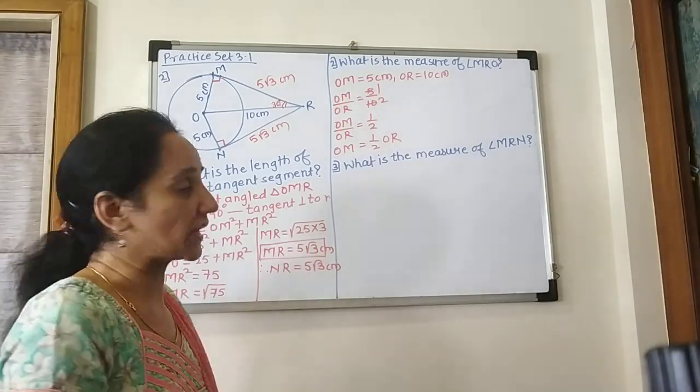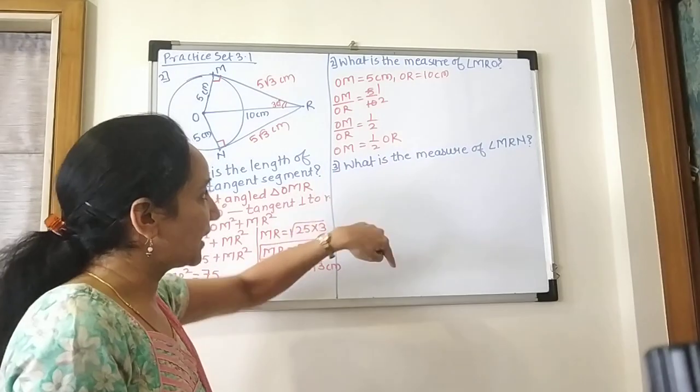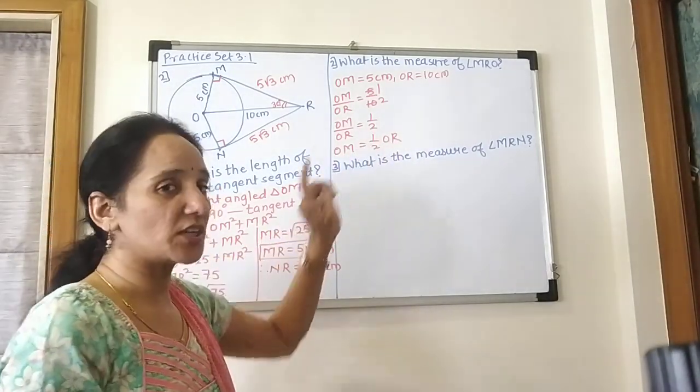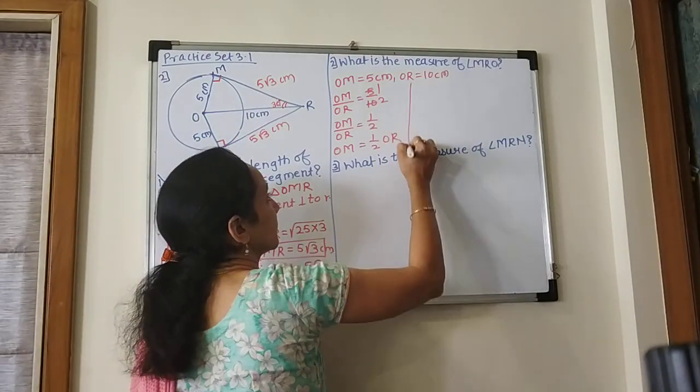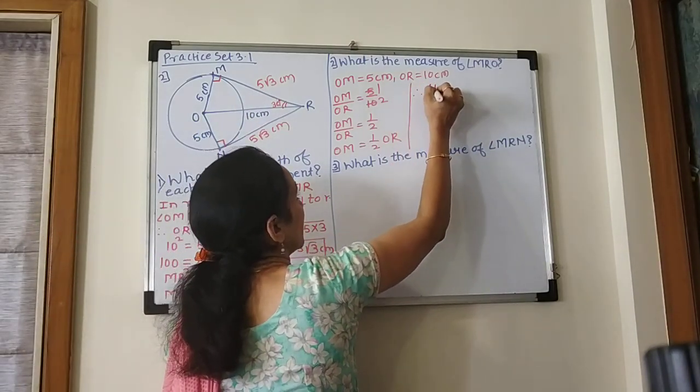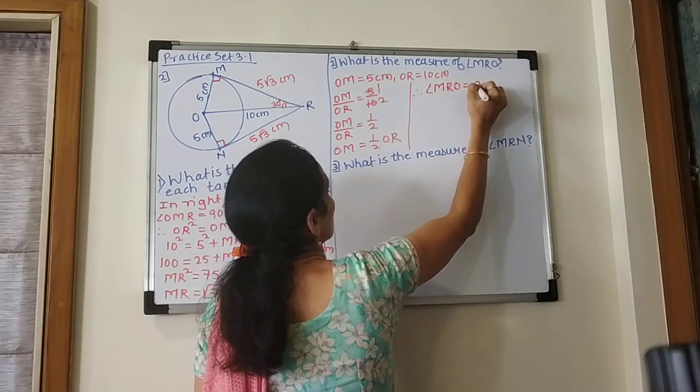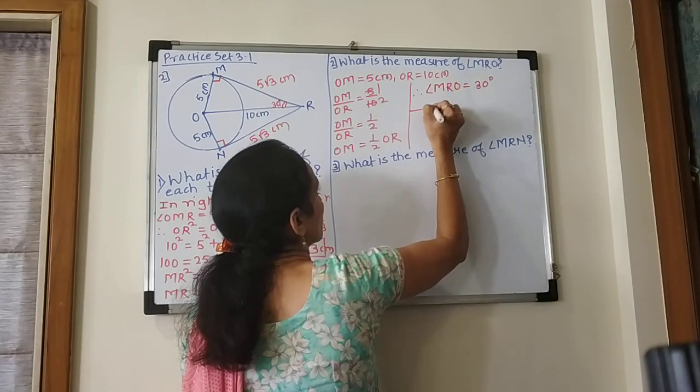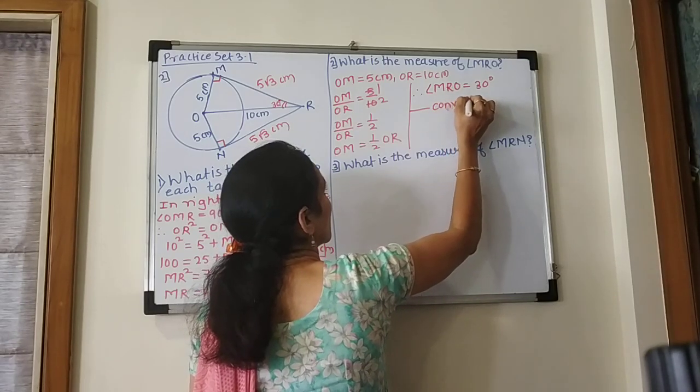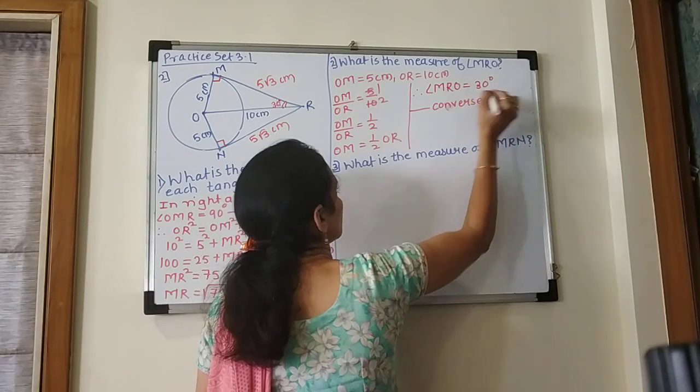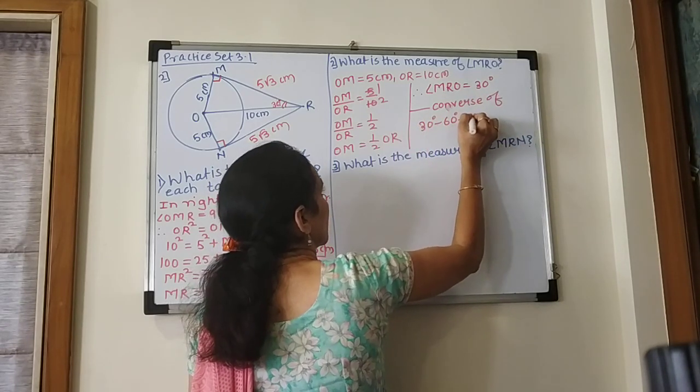Our side OM is half the hypotenuse. So the angle MRO is 30 degrees. Therefore angle MRO is equal to 30 degrees, because of the converse of the 30 degree, 60 degree, 90 degree theorem.